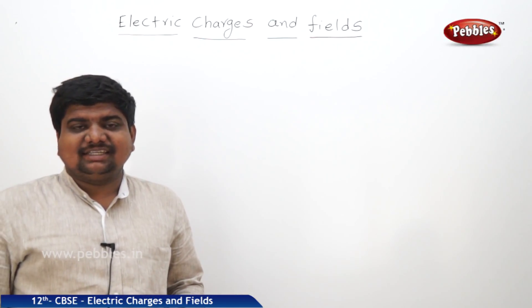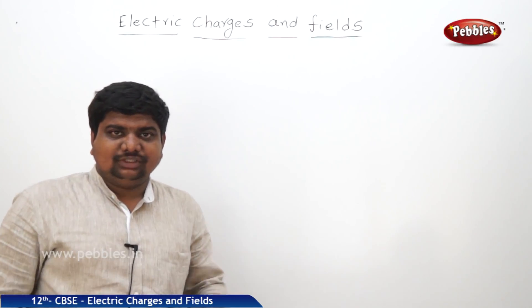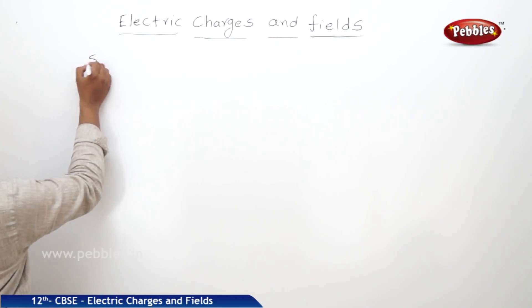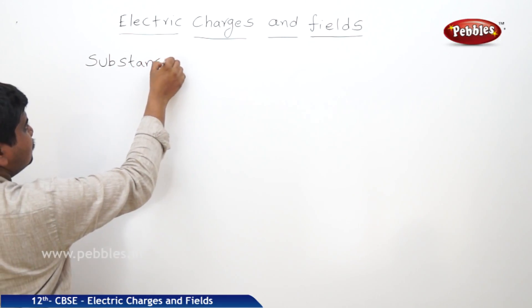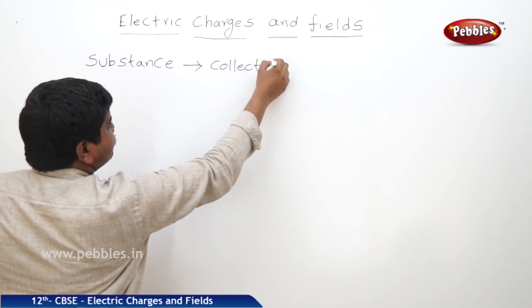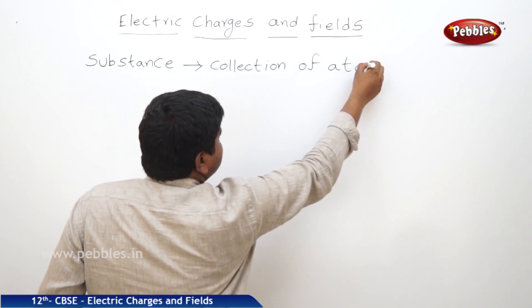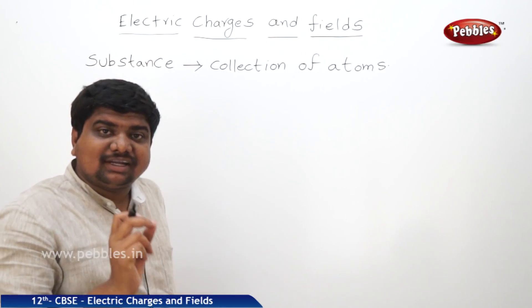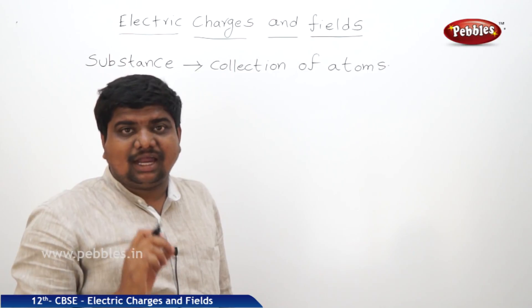Today we are going to discuss about electric charges and fields. We know that every substance is made up of atoms — a substance is a collection of atoms and atoms are collections of fundamental particles. What are those fundamental particles? Protons, electrons, and neutrons.